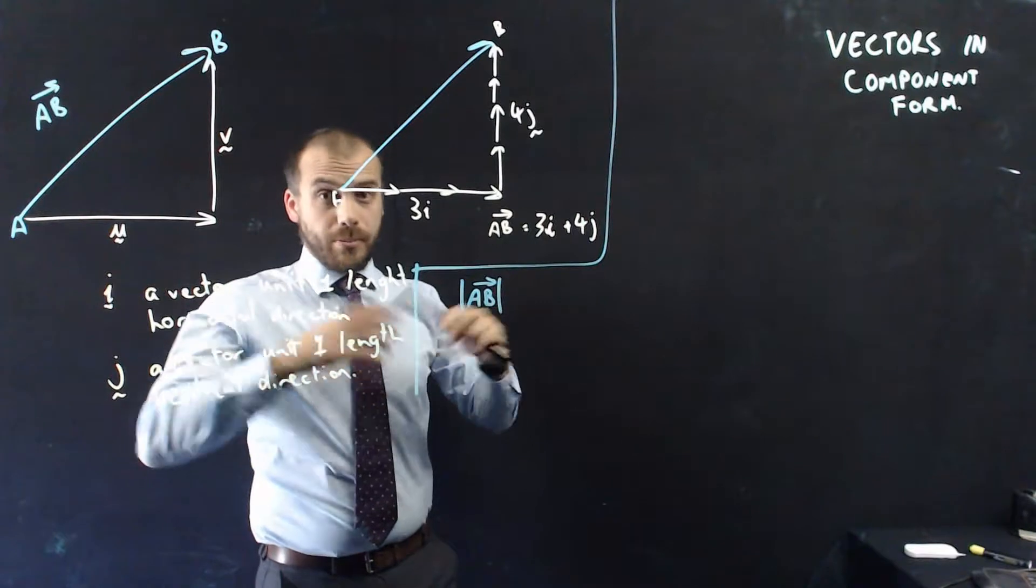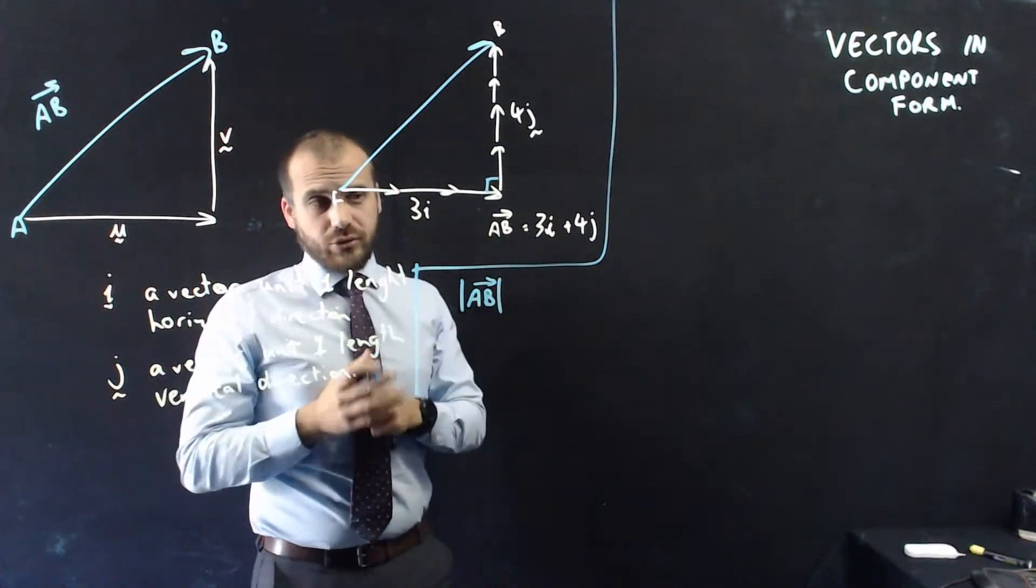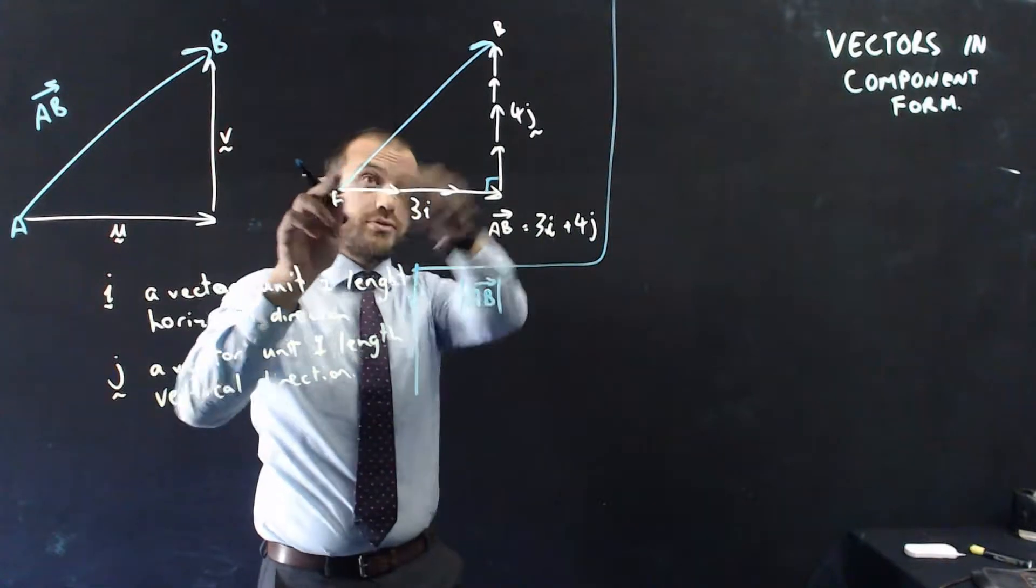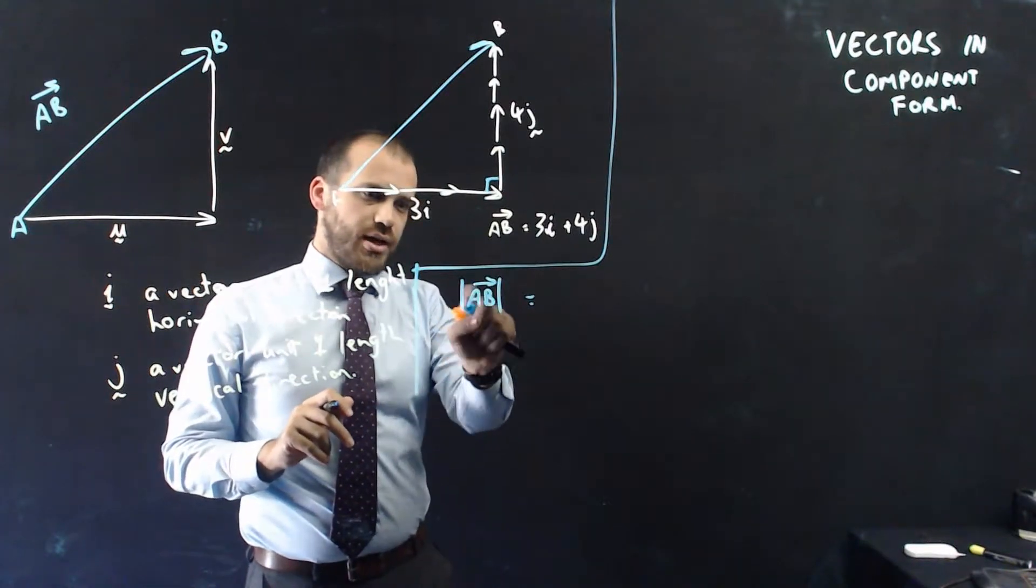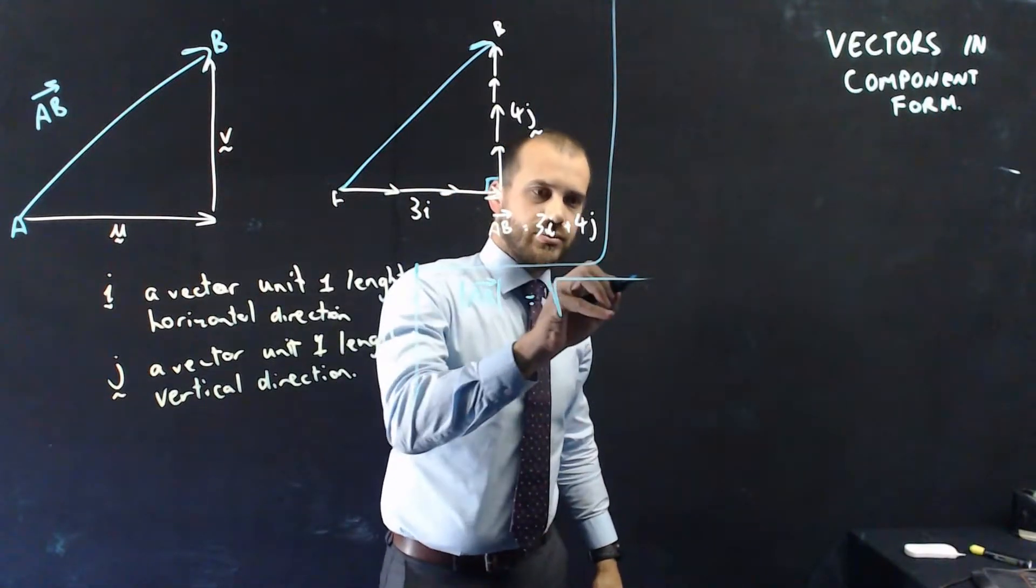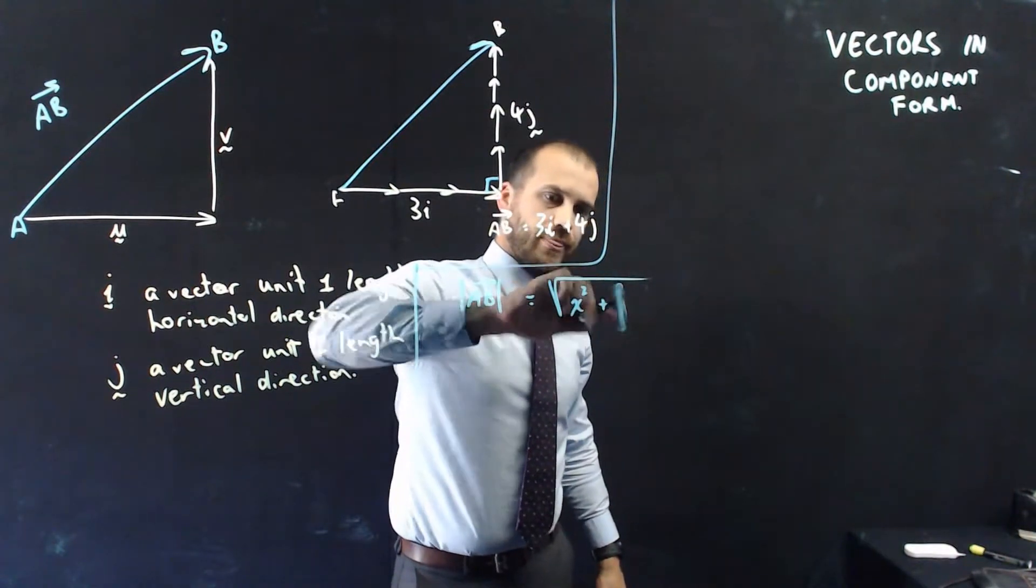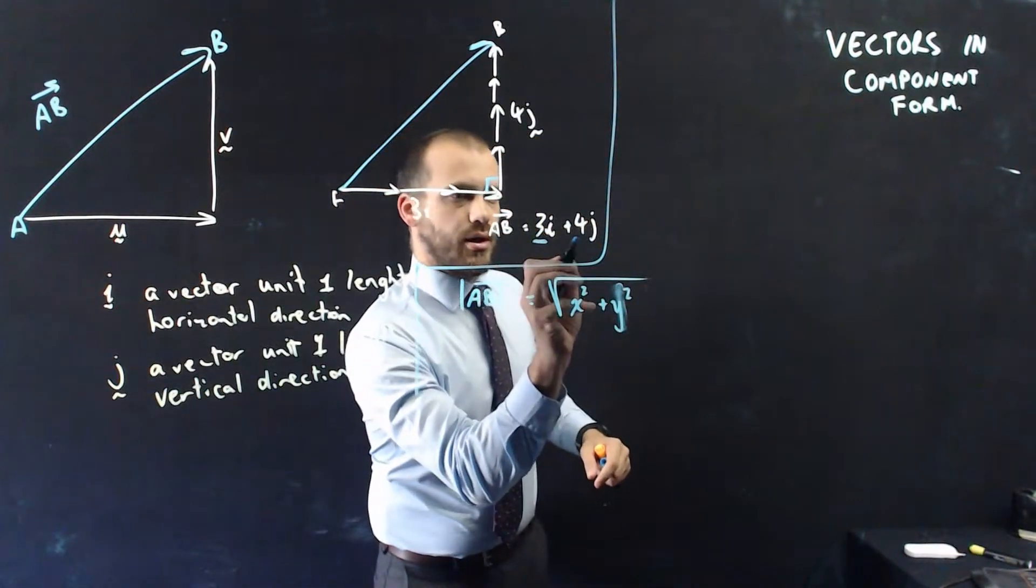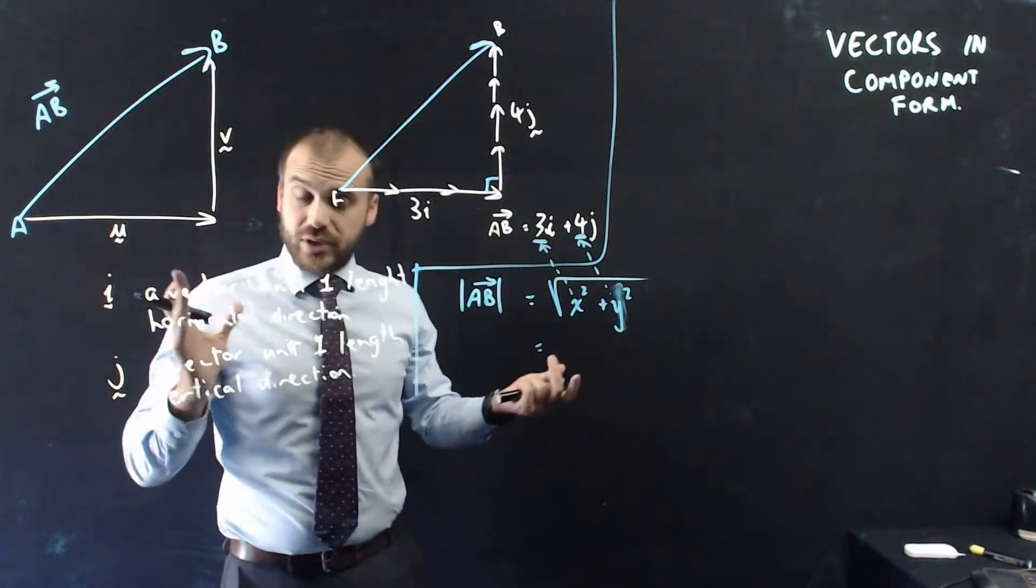Now, of course, this is useful for many reasons, but one of the reasons it's useful is because it creates this nice little right-angle triangle there. If we've got a right-angle triangle, finding the length of this vector, hypotenuse of this right-angle triangle, is going to be really straightforward. So if we want to know the magnitude, we use these two little lines around it, AB with the arrow, and then boom, boom, that says we're looking for the magnitude. And that's going to be equal to x squared plus y squared, where x and y are these bits here. All right. It's just Pythagoras' theorem.